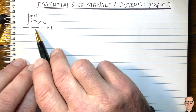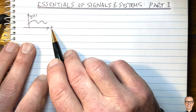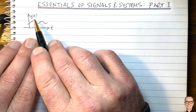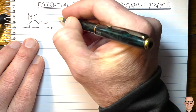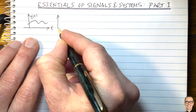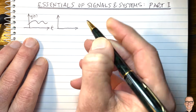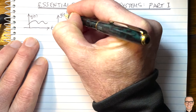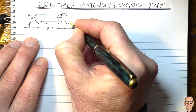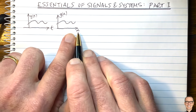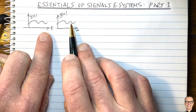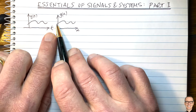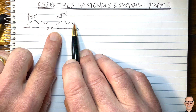Let's start by considering a generic function — here I've got a time-based function. The first essential thing to point out is that the thing in the brackets is just a variable, and I can actually replace it by anything I like without changing the shape of the function. So here I'm going to replace it by alpha. G of alpha has exactly the same shape — that's a very important concept.